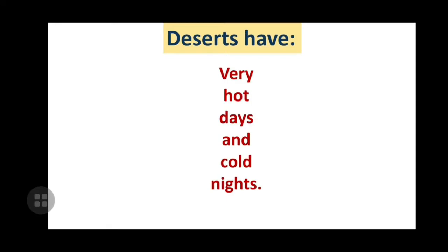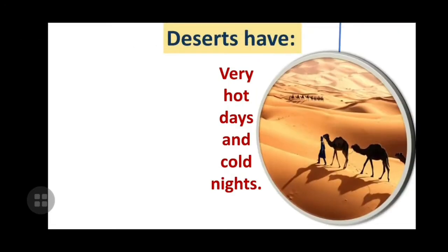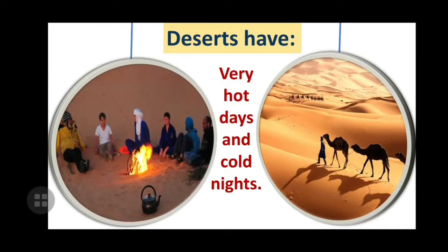One feature of deserts is very hot days and cold nights. In deserts, the days are very hot because the sun rays directly fall on the sand. But during the night, the sand loses heat and becomes very cold. This absorption of heat and its release makes the nights very cold, so we can say that very hot days and cold nights are seen in deserts.